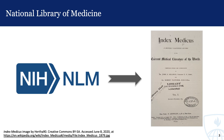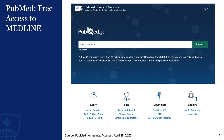The National Library of Medicine began indexing biomedical literature in 1879. This literature was once a printed index of articles called Index Medicus, but in 1960 it became one of the earliest available online sources for high-quality information, though it was only searchable for a fee. In 1996, free access to Medline was made available to the public online through PubMed.